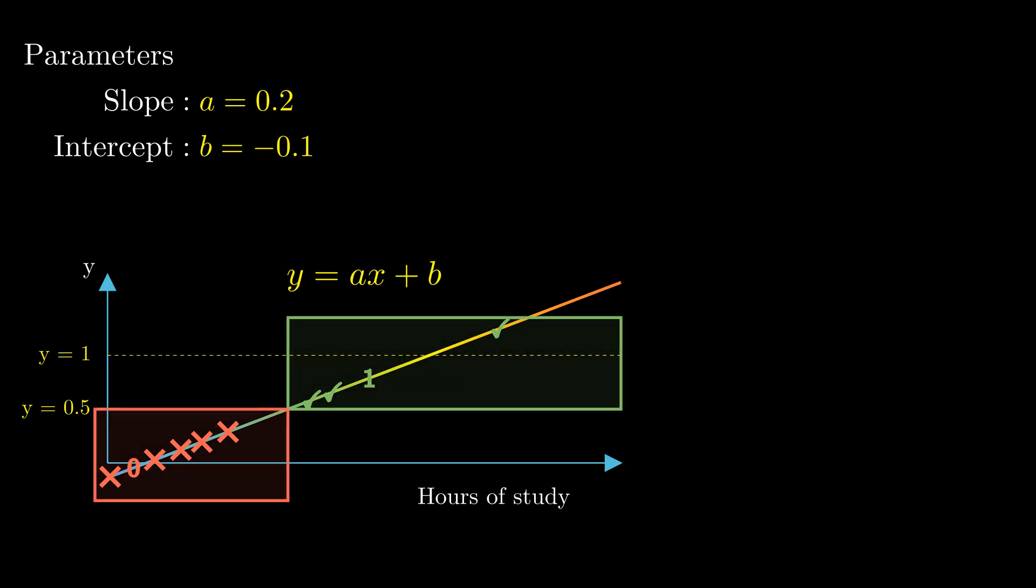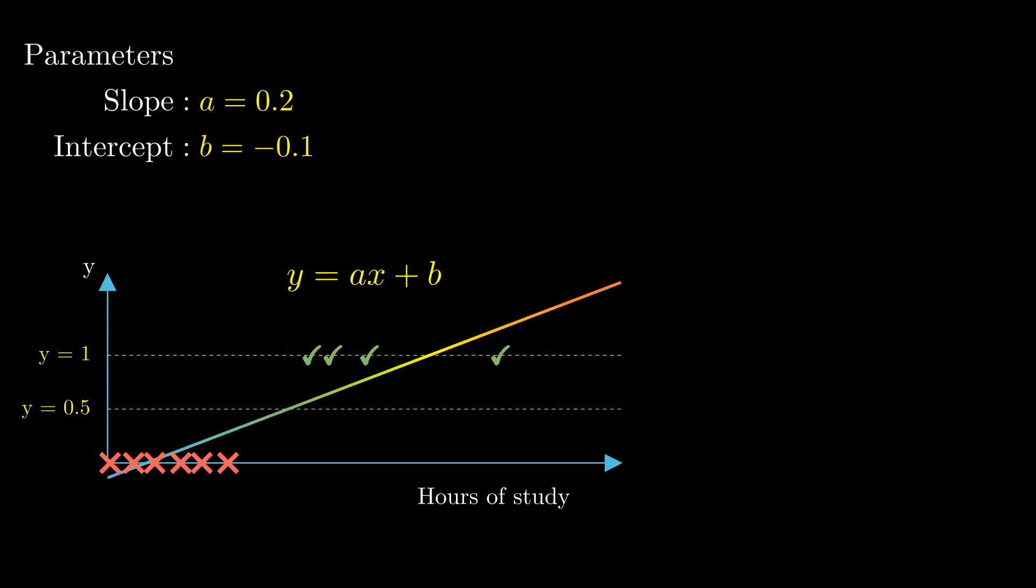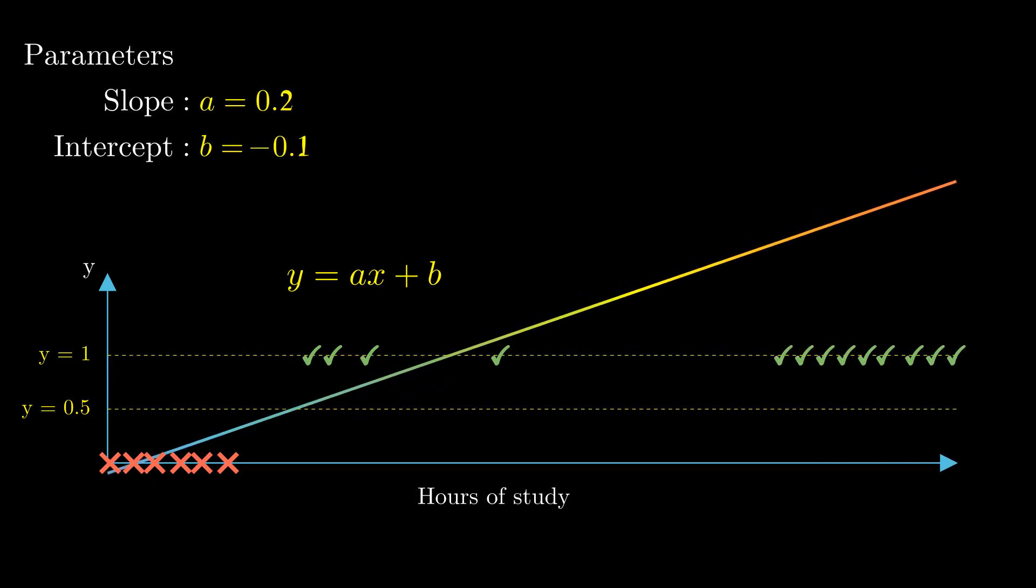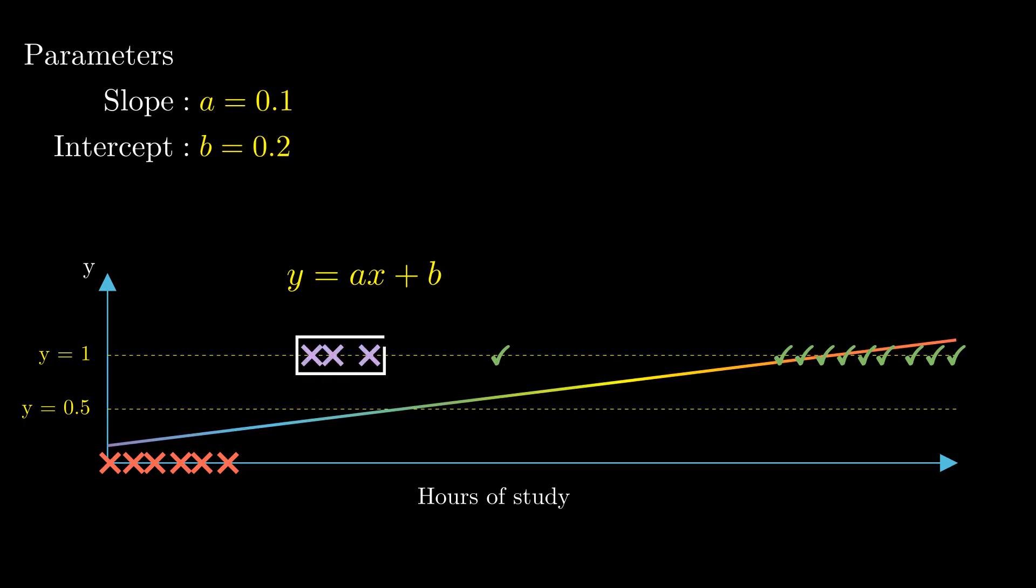While this might seem reasonable, let's see what would happen if we were to add several more positive examples to the right. This lowers the line and results in several positive examples being misclassified as negative. But can we modify linear regression to avoid this glitch?